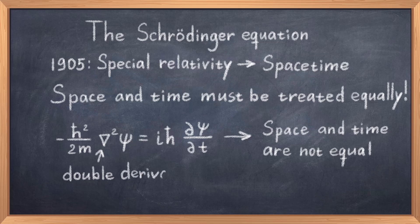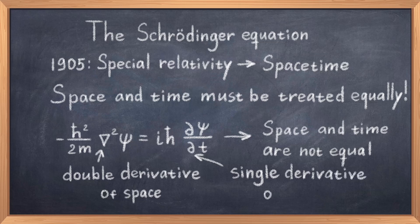On the right hand side we have a single derivative with respect to time, as the Schrödinger equation does not treat space and time equally. This is the reason why this equation doesn't work for describing spacetime, and thus it doesn't work for fast objects. This means that the Schrödinger equation is not a relativistic equation, and cannot correctly describe objects moving close to the speed of light.